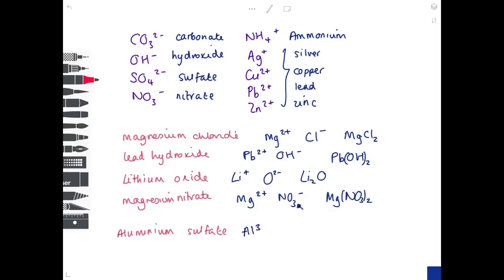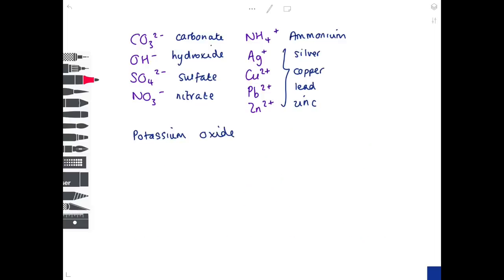Lastly, aluminium sulfate: aluminium is group three so Al³⁺, and sulfate is SO₄²⁻. You need to find a common multiple of 3 and 2, which is 6 — so two aluminiums give 6+ and three sulfates give 6−. The formula is Al₂(SO₄)₃, with brackets around the sulfate as usual.